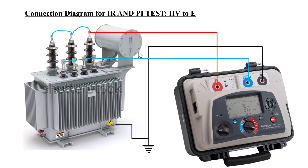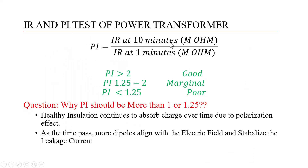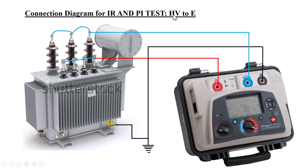For high voltage to earth, the positive lead is connected to the high voltage winding with all three phases shorted, and the negative lead is connected to earth. The guard is now connected to the low voltage winding, because the low voltage winding may disturb the HV-to-earth test results. The guard is used to protect the results and keep them accurate.